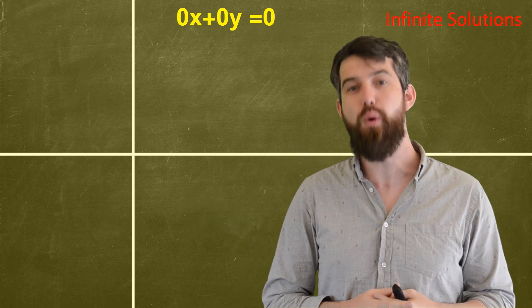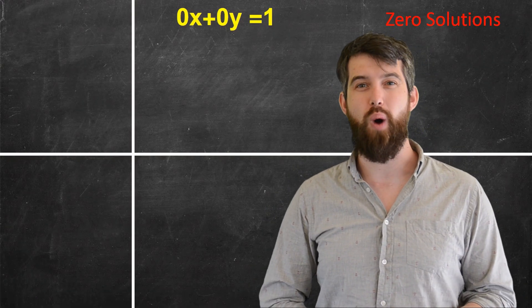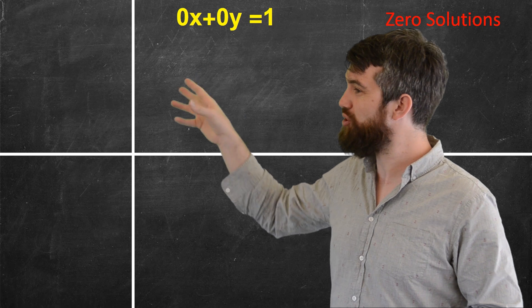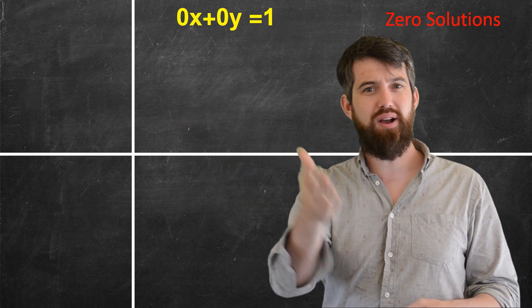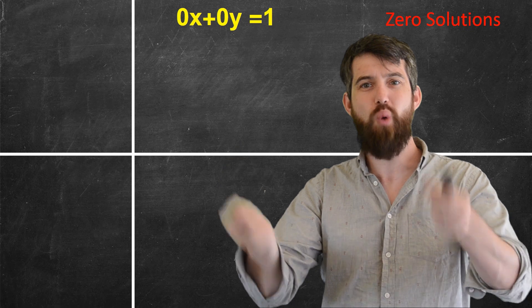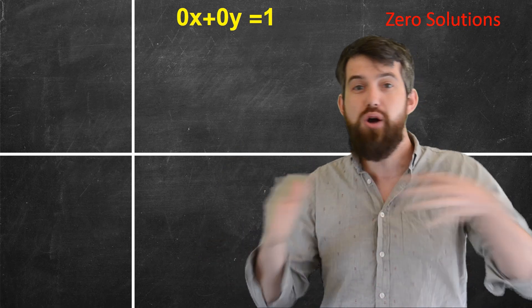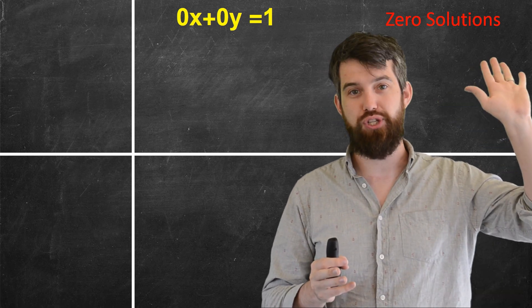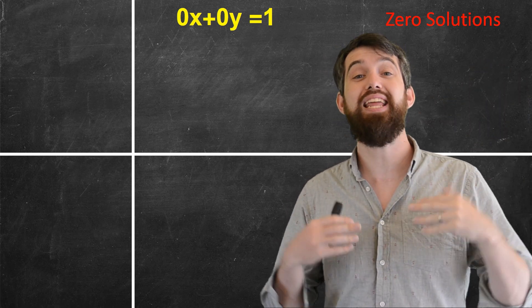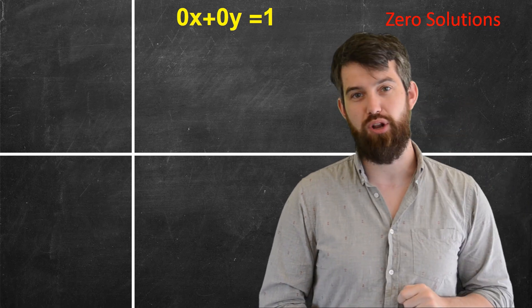There's infinitely many points that will satisfy this equation, but that's not always the case. So for example, look at this funky one. 0x plus 0y is equal to 1. But how could that be? No matter what x and y I choose, I get 0 on the left-hand side equaling to 1. There's no solutions to this. So this is our first zero solution example. All the previous ones had infinitely many different solutions.